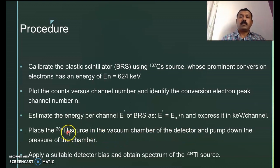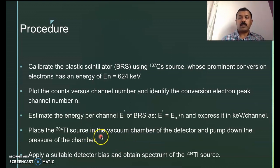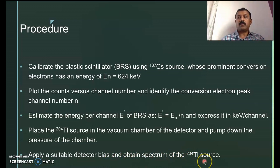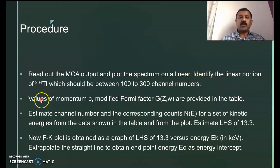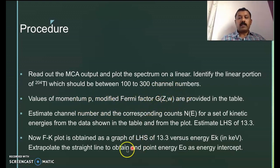Then place the thallium source in the vacuum chamber. This should be conducted in vacuum at very low pressure. Ensure the pressure in the pump is low and apply suitable detector bias to obtain the spectrum of thallium-204. Read out the MCA output and plot the spectrum on a linear scale, identifying the linear portion of the thallium-204 spectrum between channel numbers 100 to 300. Then compute the momentum and also the modified Fermi factor. If you plot this modified Fermi factor as a function of energy, you will get a straight line — the x-intercept gives the endpoint energy.